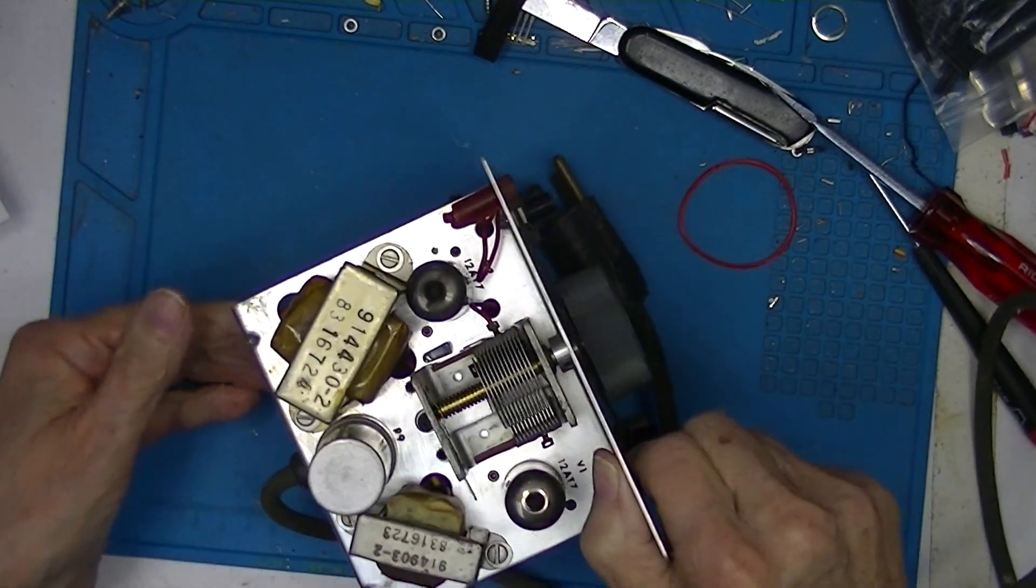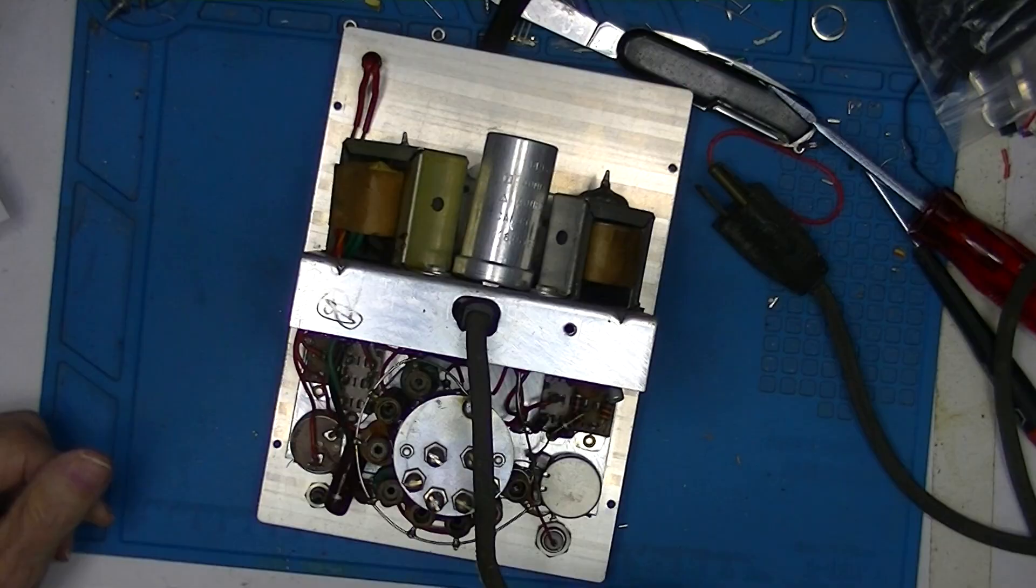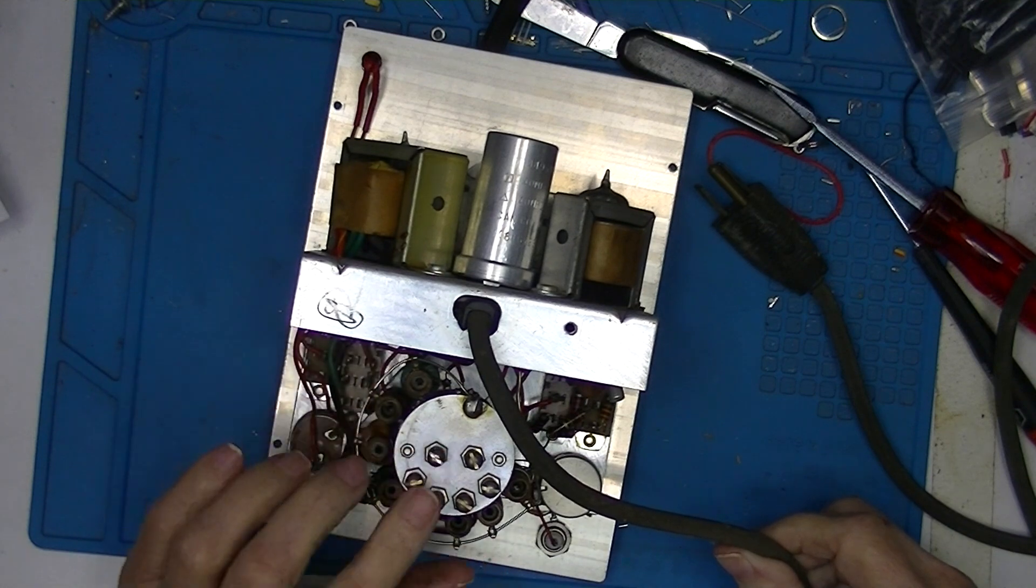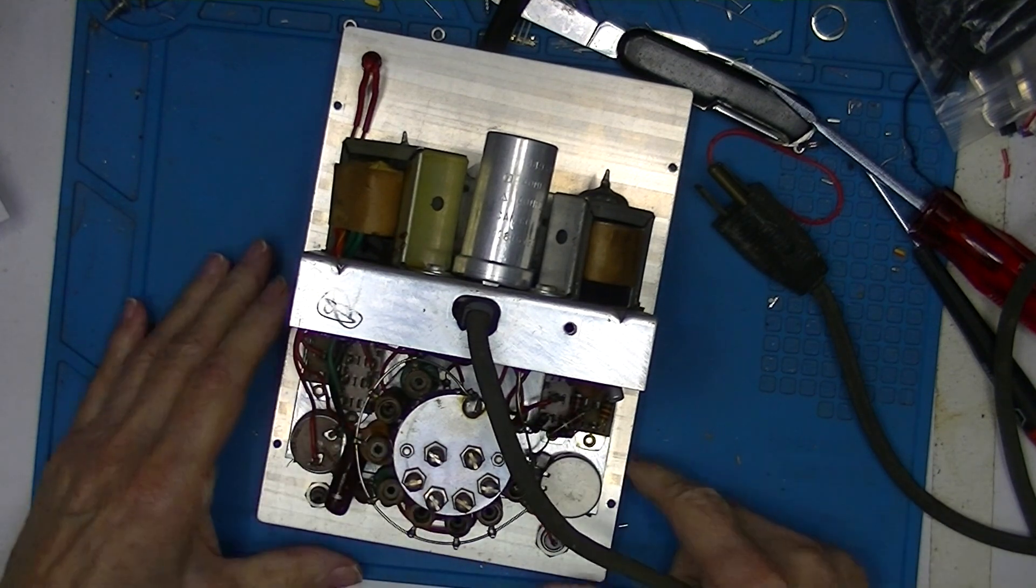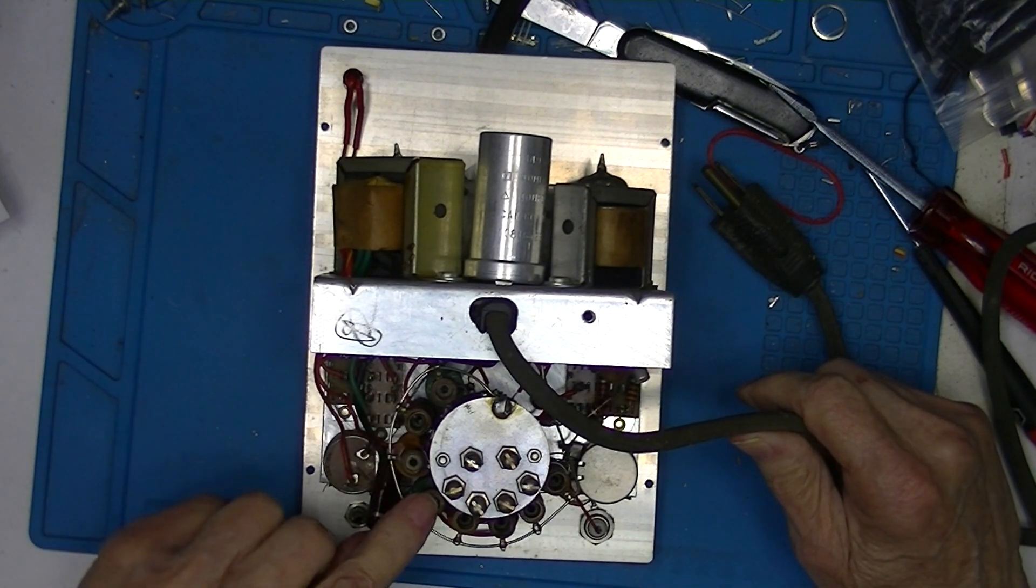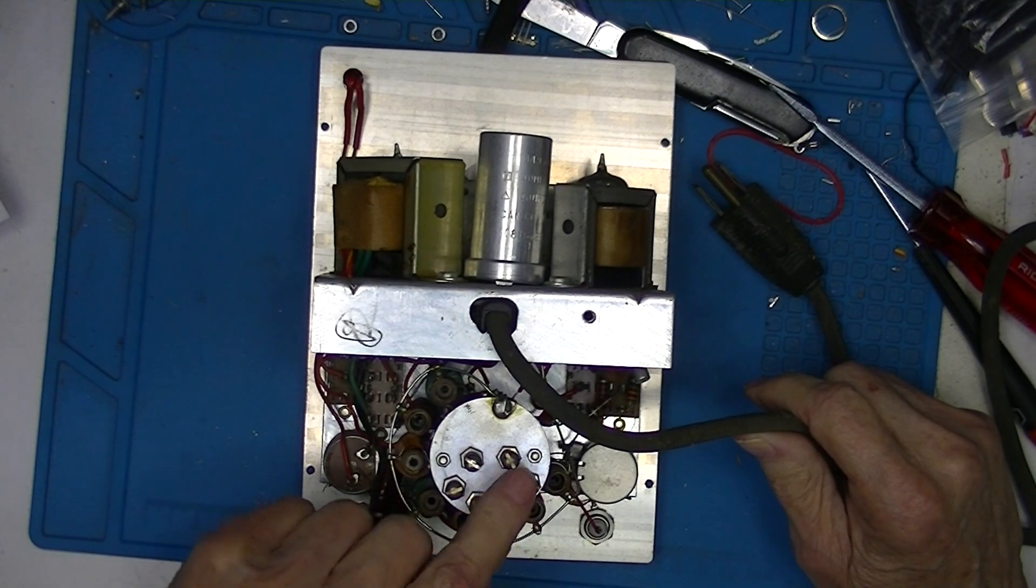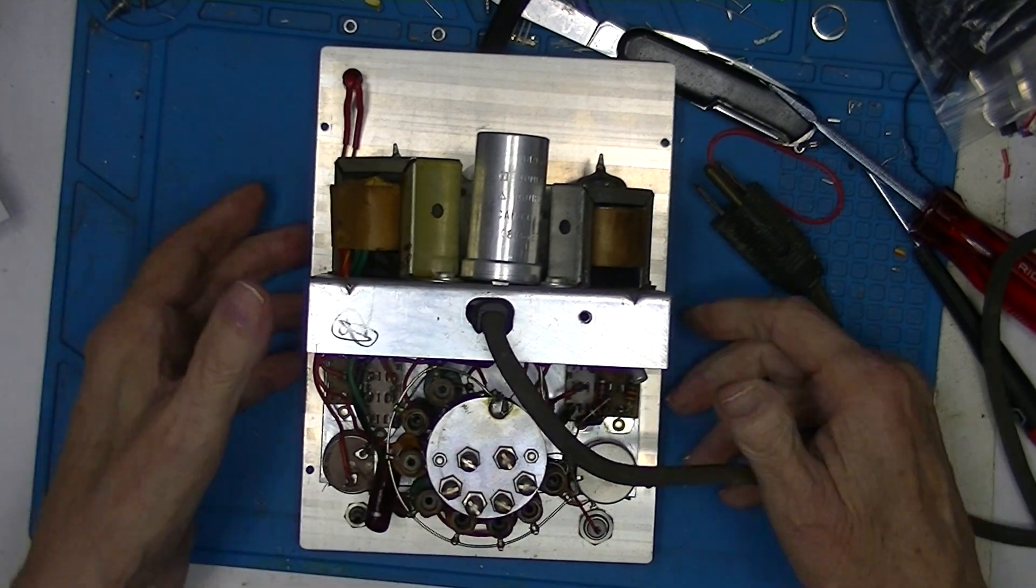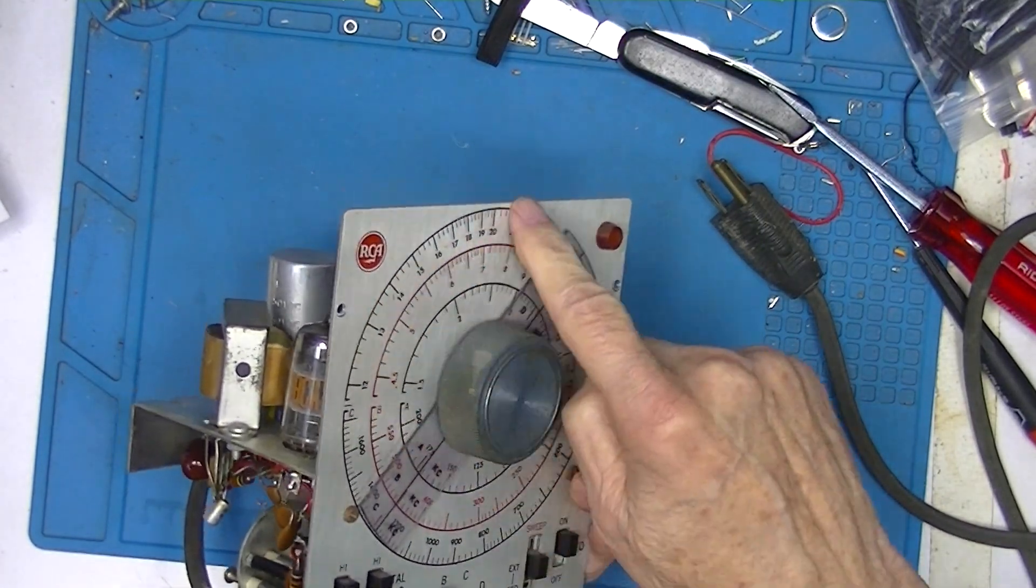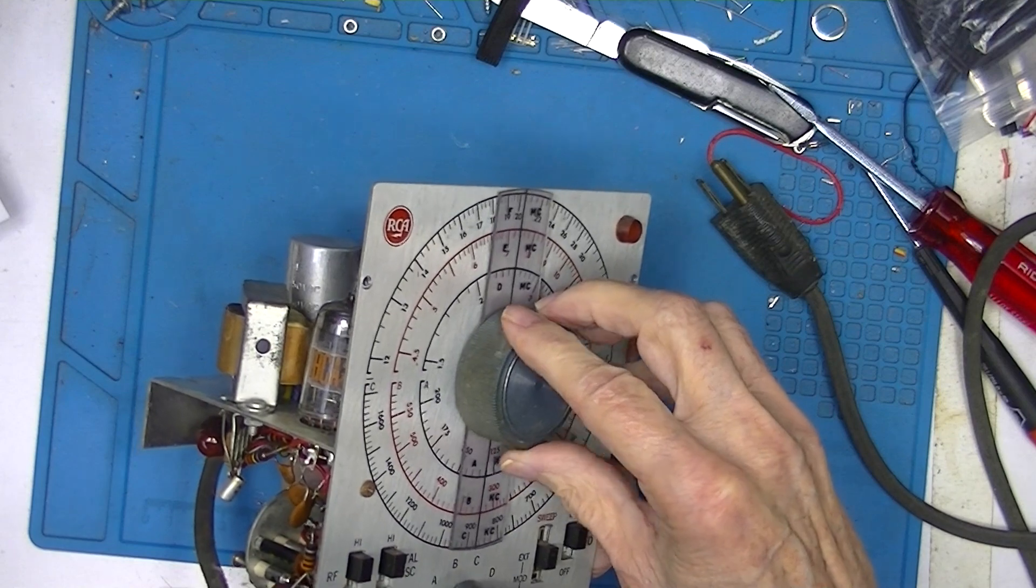And when it falls down you run the risk of damaging these coils. These coils are tunable and there are capacitors here that are tunable to adjust the frequency, so when you set the dial it's more or less accurate.